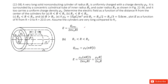The next case is R between R1 and R2. We draw the Gaussian surface in that region. The enclosed charge is just the cylindrical object with radius R1, since the space between R1 and R is empty. So the enclosed charge is density times volume pi R1 squared times L. Inputting that, pi cancels and L cancels, giving us the result.